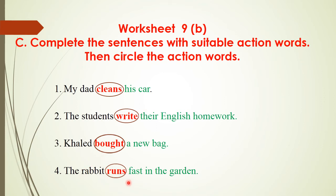Number four: the rabbit runs fast in the garden — the subject is rabbit and runs is the action word. That's all for the answers. Please check your answers and correct any mistakes.